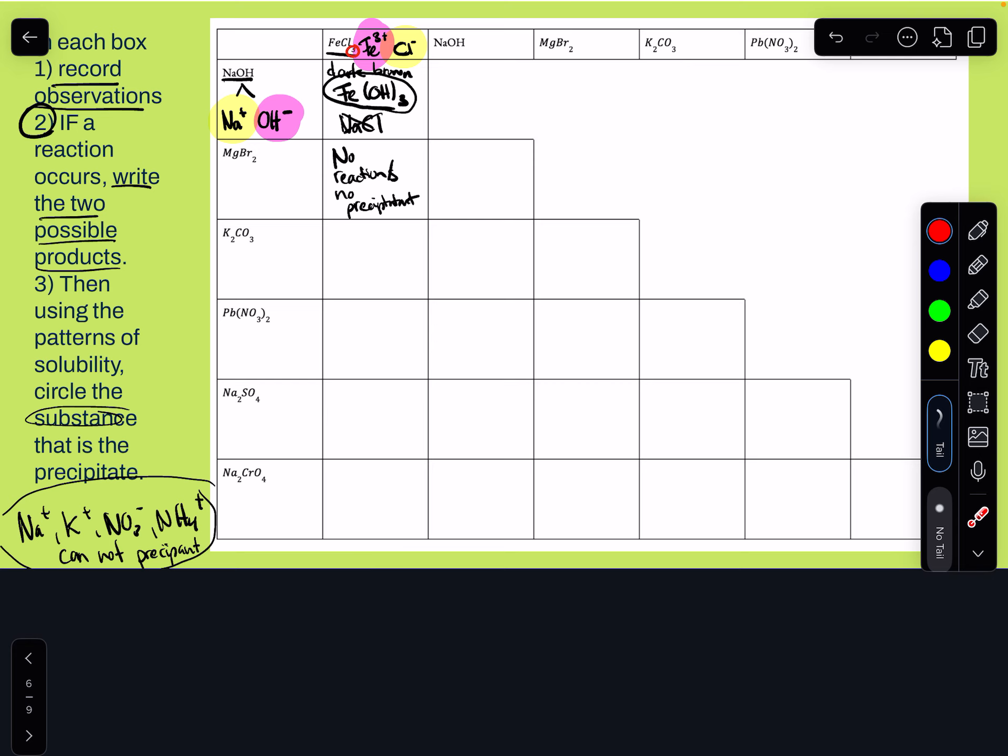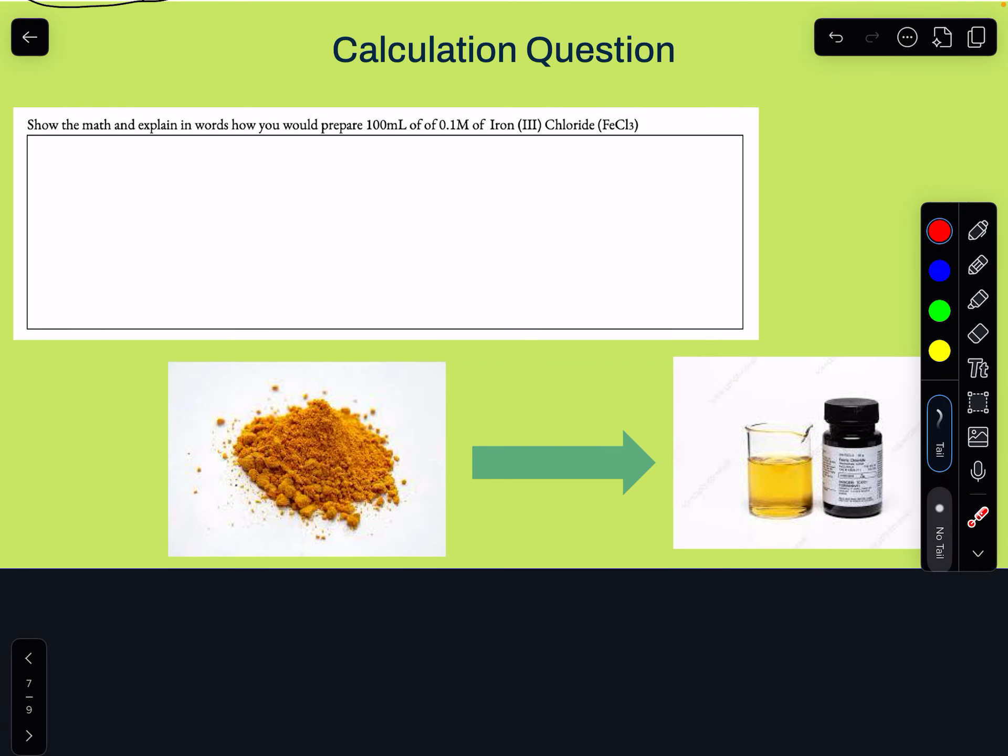Once you complete the chart, then you'll want to go back to the beginning to work on, there's a beginning calculation question that says to show the math and explain in words how you would prepare a hundred milliliters of a 0.1 molar sample of iron three chloride. So the idea of this question is iron three chloride is a solid, but we used it as a solution. So show me the math and explain how I did that. I made the solutions starting with a solid product. So in a sense, how do I turn a solid into a molarity? What's the values I need? What's the measurements I need? And what would I do?